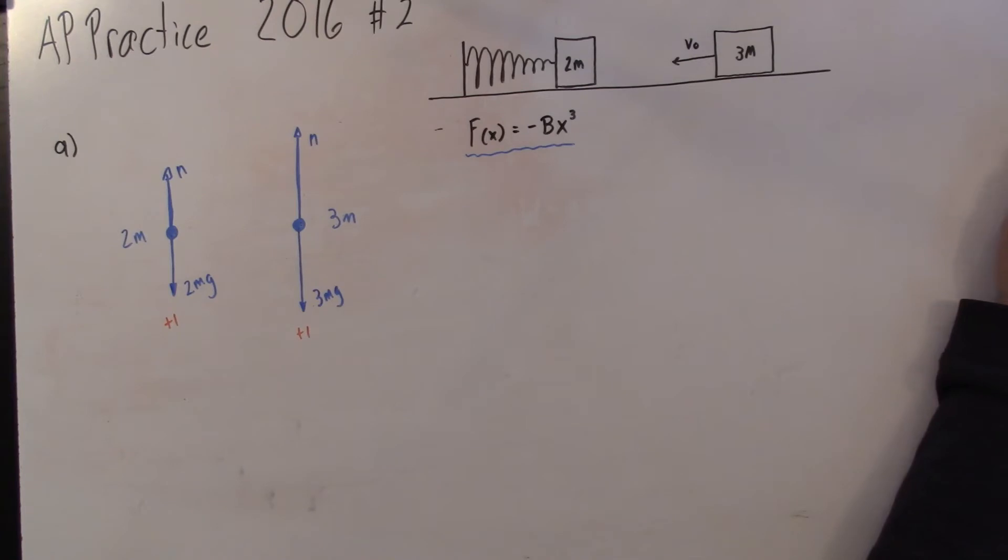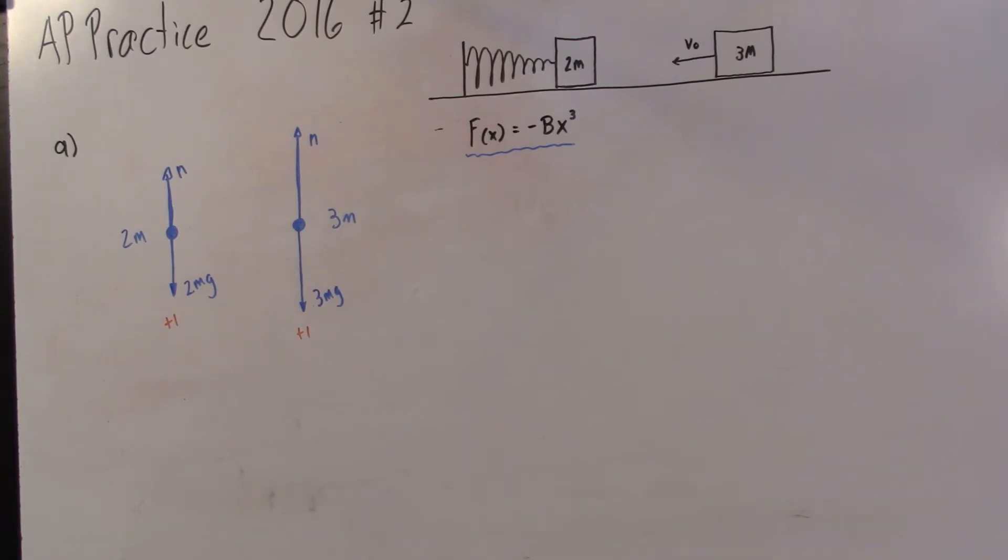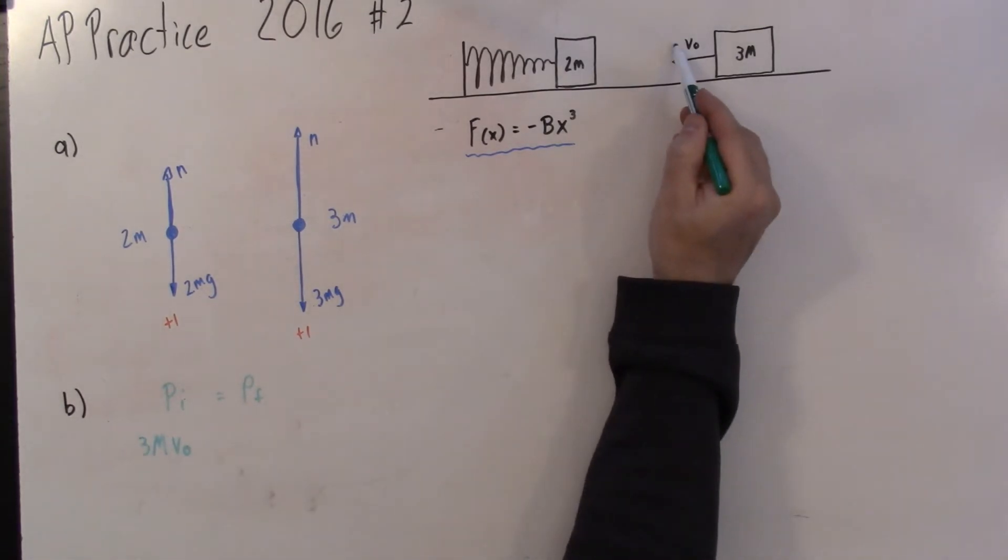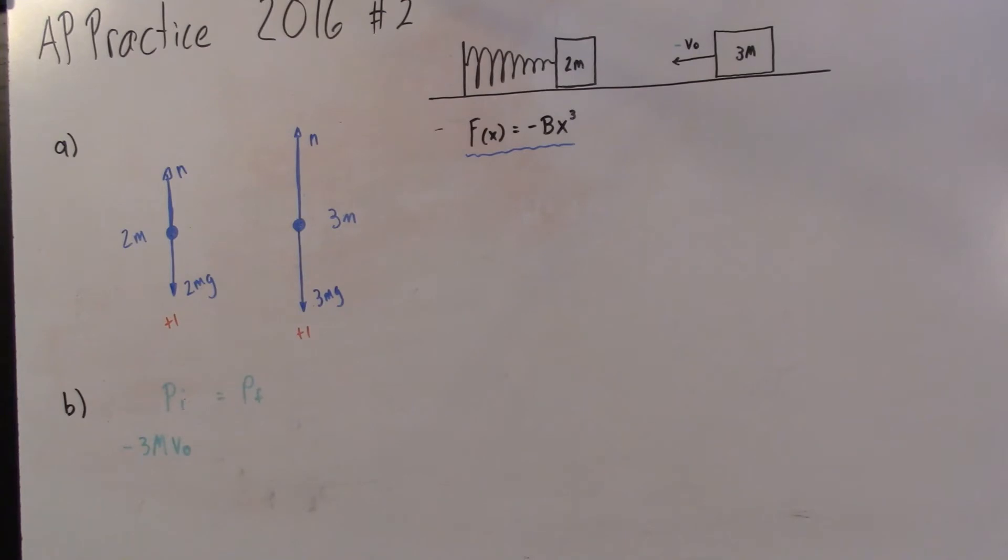Let's look at B. B says derive an expression for the speed of the blocks immediately after the collision. When you see a collision problem, this is an indication that this is a conservation of momentum type problem. The main thing we know is that the initial momentum has to equal the final momentum. Before the collision, we have a block of mass 3m moving at speed v0. One thing that's important is that we see it's moving to the left, so we need an indication that the initial momentum is all negative.